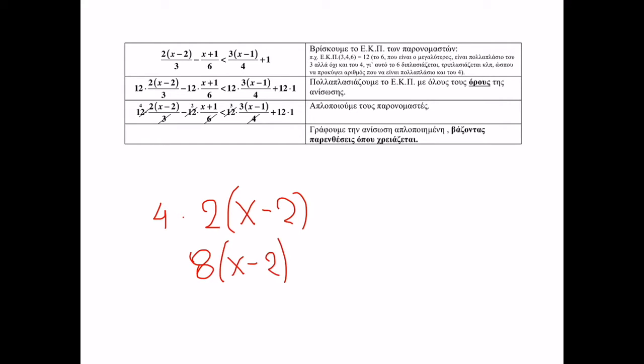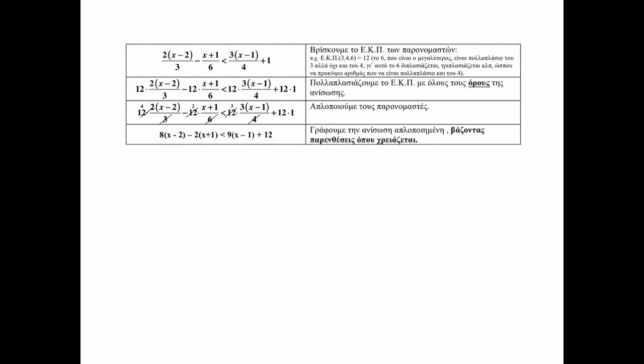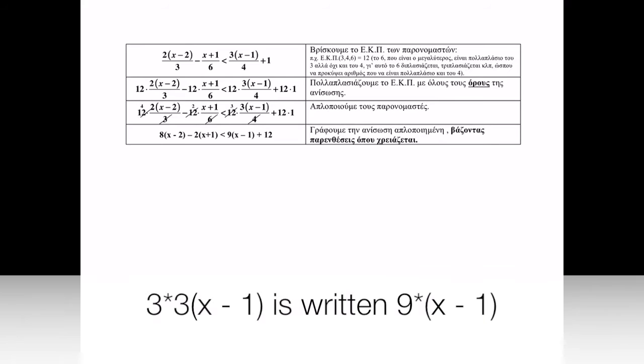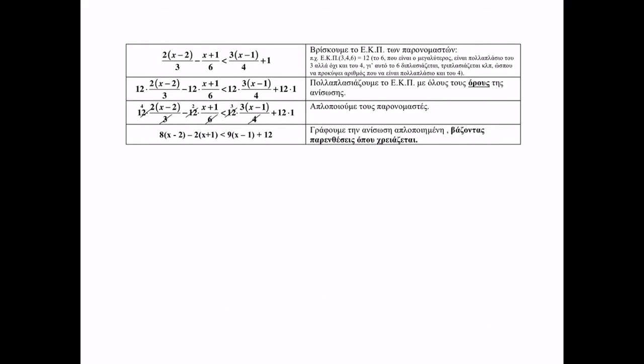In the second fraction, we had two terms, a sum of two terms, x plus 1, so this has to be put in a parenthesis. In the third fraction, like in the first one, 3 times 3, which is 9 times x minus 1 in a parenthesis.